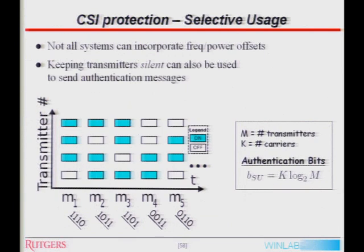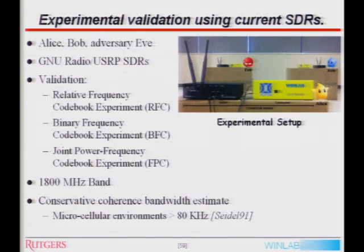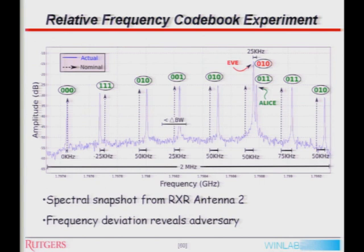Not all systems are going to be able to do these frequency offsets, so there are some schemes that accommodate legacy systems that can get by with some added processing on the back end, as opposed to frequency shifting things and doing power degradations. One scheme is called selective usage. Selective usage says where you have a traditional pilot, either turn it on or turn it off. By being active or silent, you can essentially send your authentication message at a lower bit rate. Here's a picture of experimental validation done in the 1800 MHz band using a conservative bandwidth estimate to perform these tests.